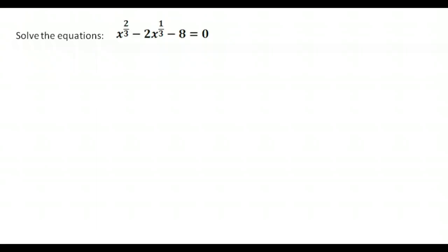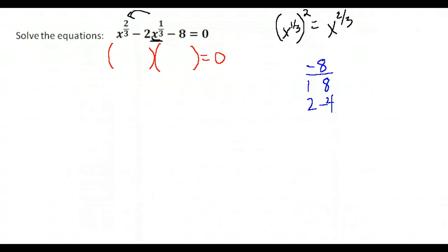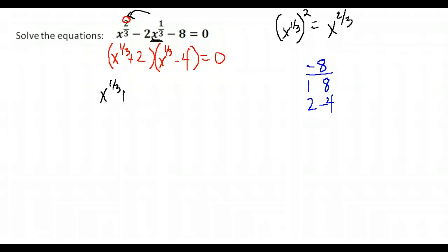Here is one last problem that is quadratic in form. The term x to the one-third, when squared, gives x to the two-thirds, which is the leading term. We take the end number, negative 8, and need factors that give the middle term, negative 2. Factors of 8 are 1 and 8, and 2 and 4. Using positive 2 and negative 4: they add to negative 2 and multiply to negative 8. When we separate, x to the two-thirds cut in half gives x to the one-third in each parenthesis. Our factors are x to the one-third plus 2 and x to the one-third minus 4. Set each equal to zero and solve.